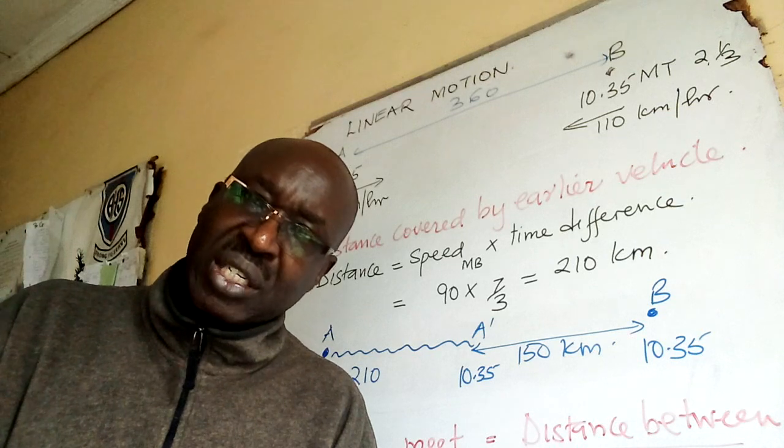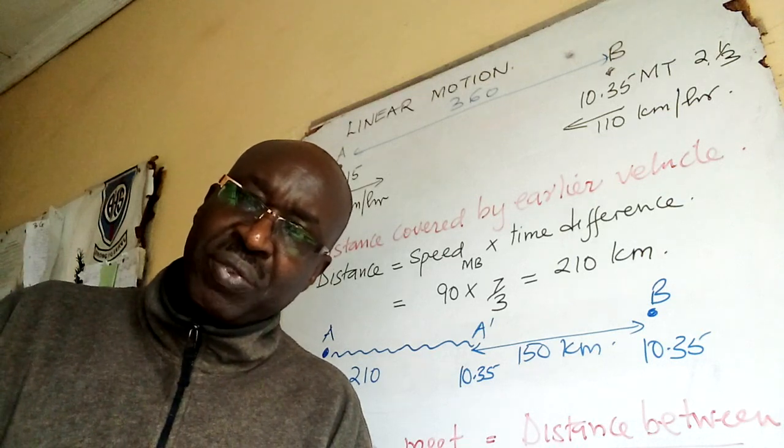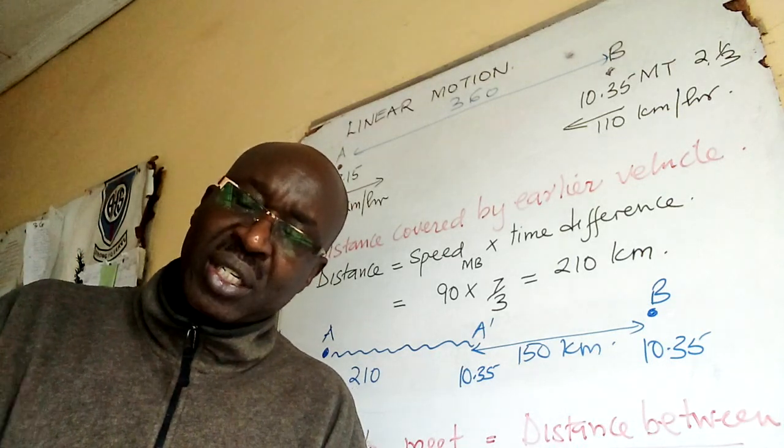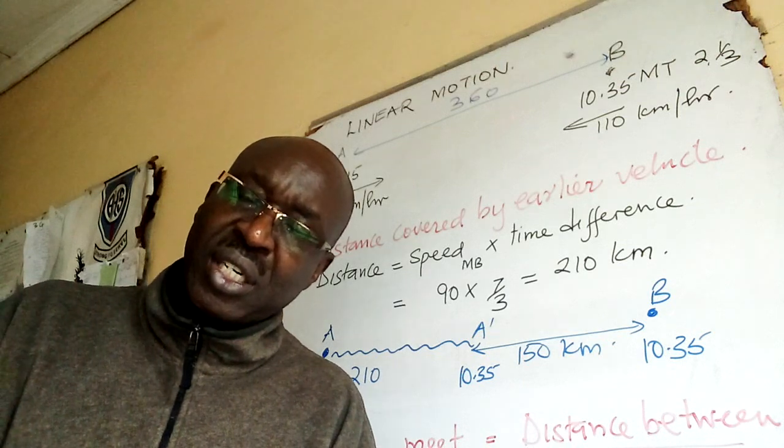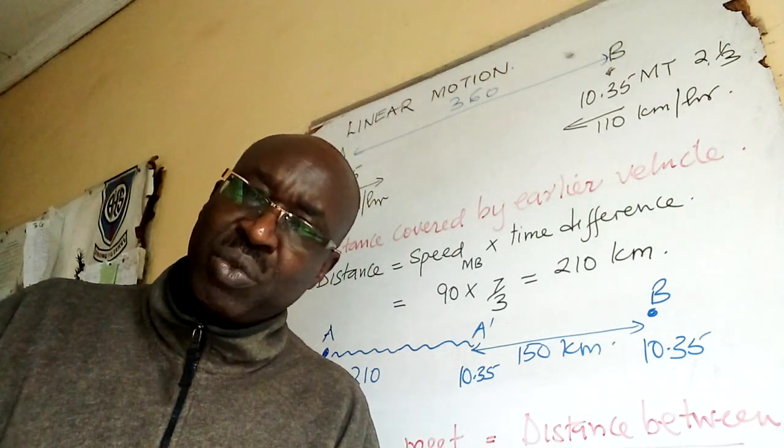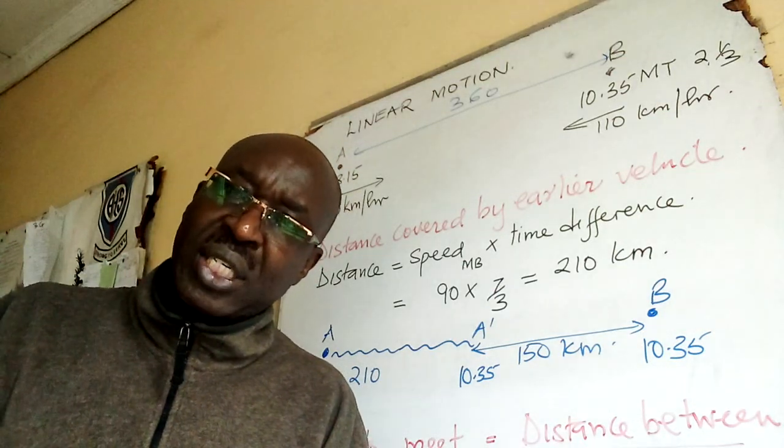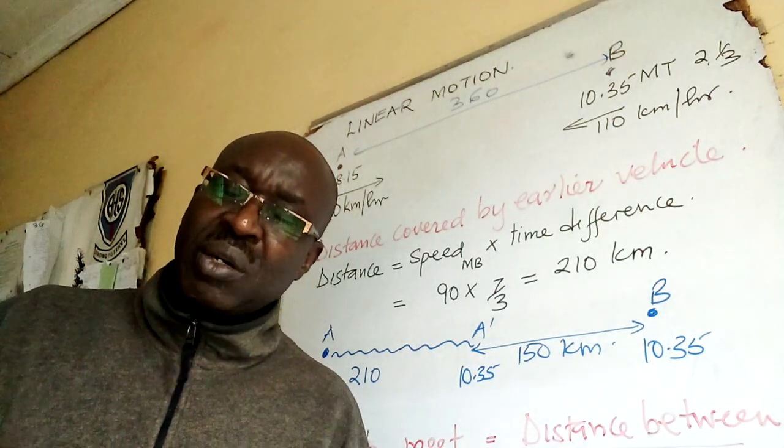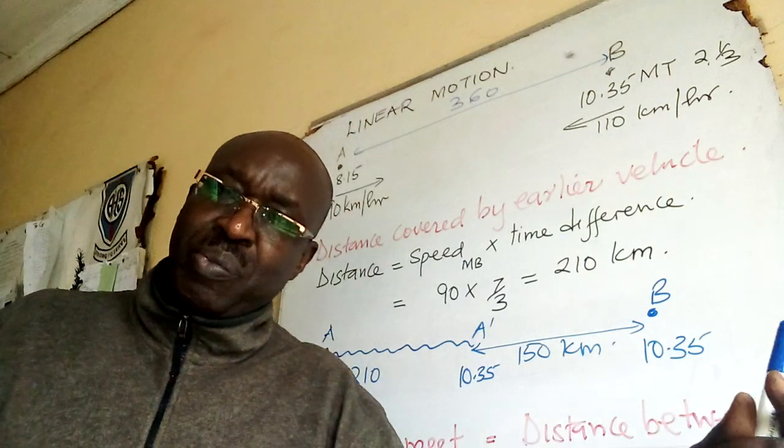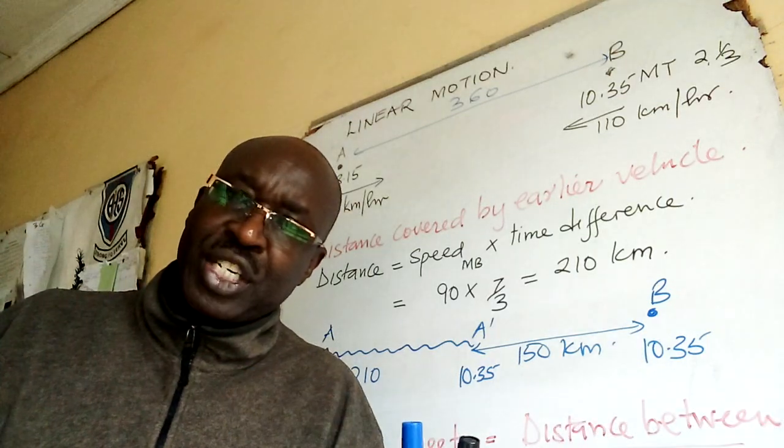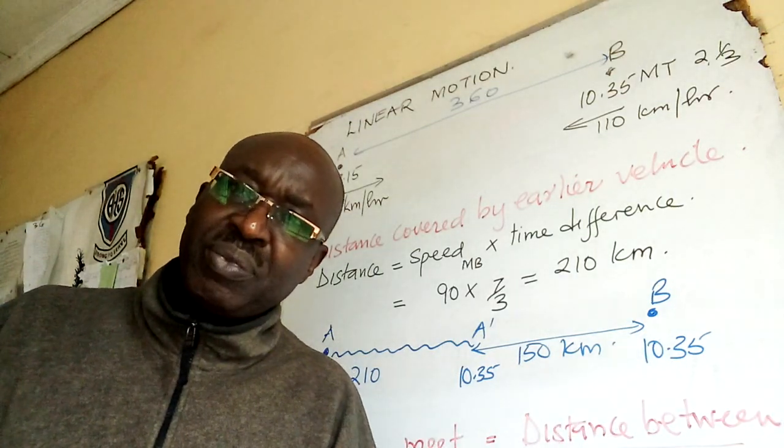Number two: what we call relative speed. When vehicles are going towards the same direction we subtract. So if one is moving at 60 and another one is moving at 100, then the relative speed is 100 minus 60.